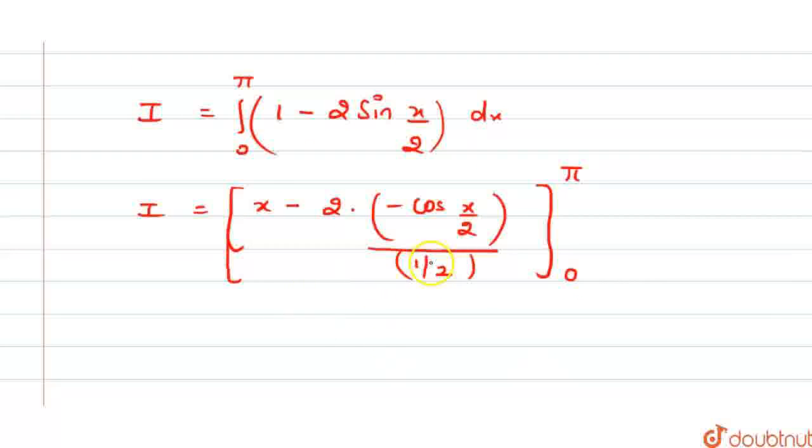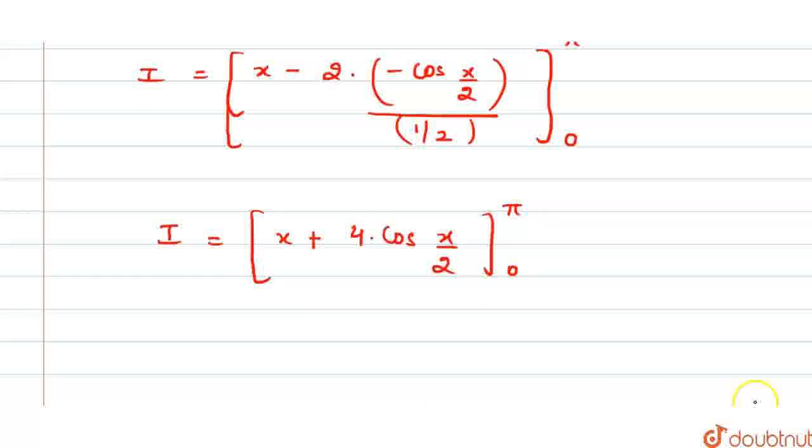If we solve this, the 1/2 will go to the denominator. This will be I = x - 2·2, which is 4, and this minus and this minus will become plus. So this will be x + 4 cos(x/2), and the limit of integration is 0 to π.